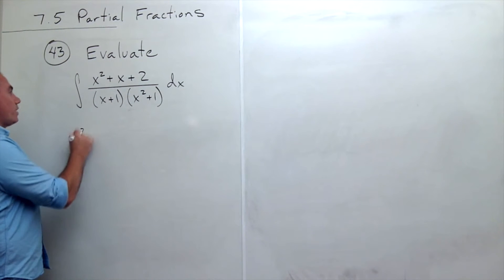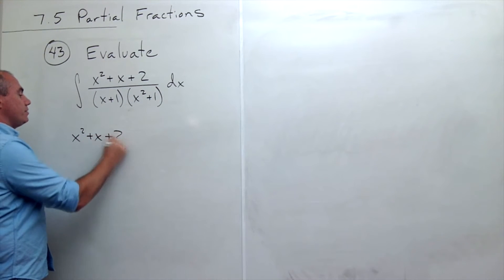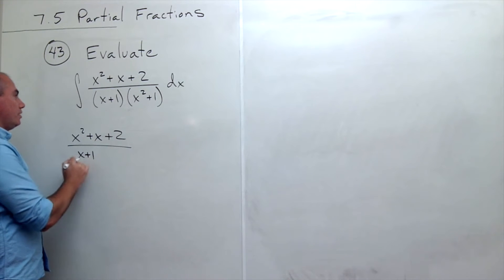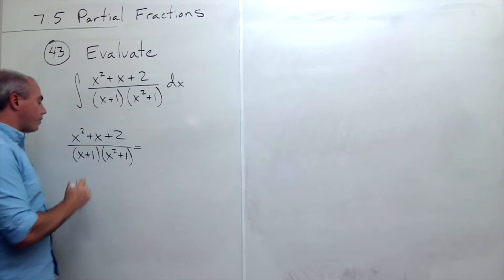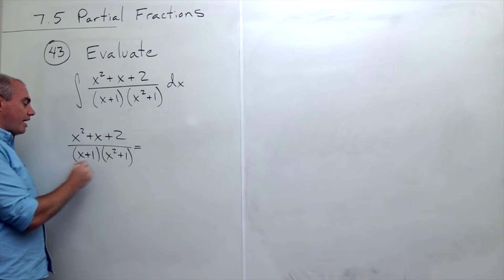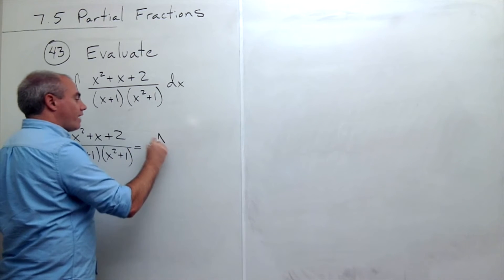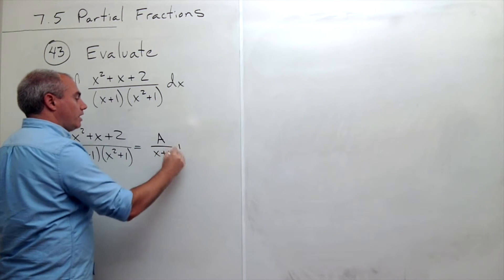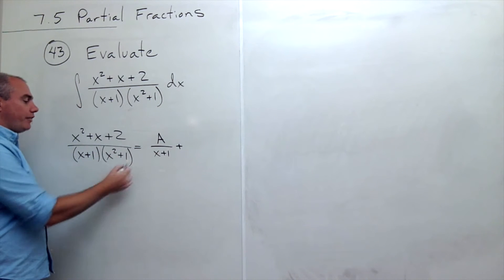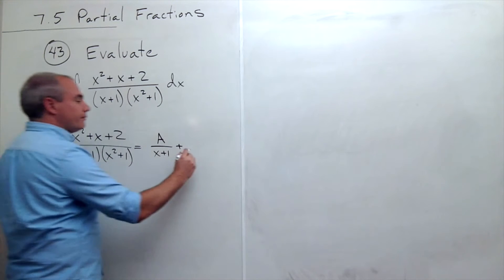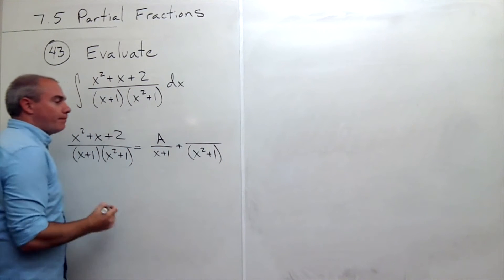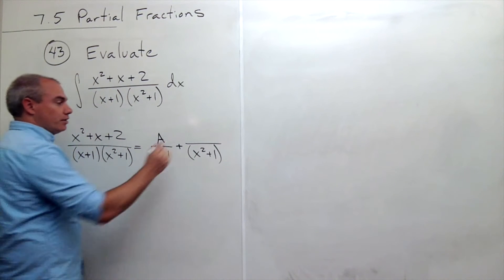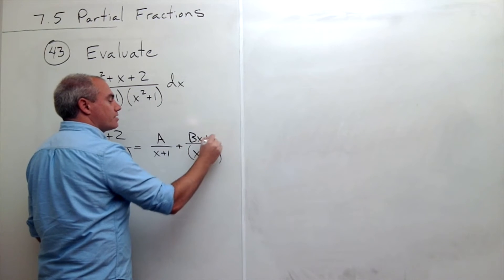So I've got my x squared plus x plus 2 divided by x plus 1 times x squared plus 1, and the way that this is going to break down is I'm going to have a fraction for my x plus 1 on the bottom. I'll have a over x plus 1 plus I'll have another fraction for my x squared plus 1 factor. This is an irreducible quadratic, so on top it could be linear, so this is bx plus c.